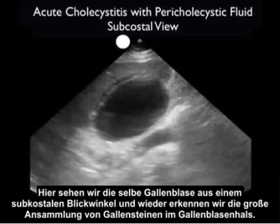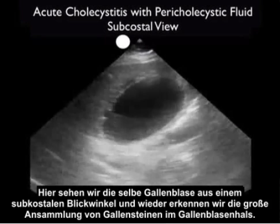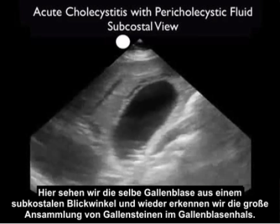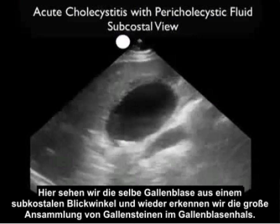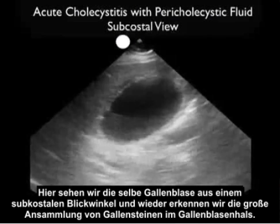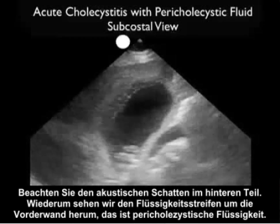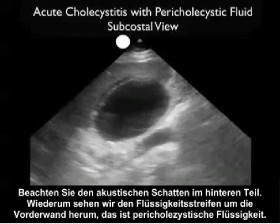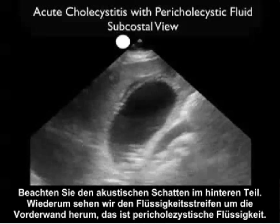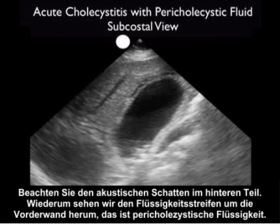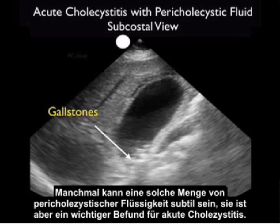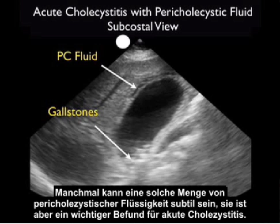Here we're looking at that same gallbladder from a subcostal view. We can appreciate the large concretion of gallstones present within the neck of the gallbladder and note the posterior acoustic shadowing. We can also see that stripe of fluid surrounding the anterior wall consistent with pericholecystic fluid. Sometimes that amount of pericholecystic fluid can be subtle, but that's a significant finding for acute cholecystitis.